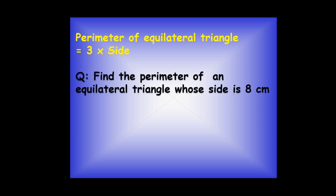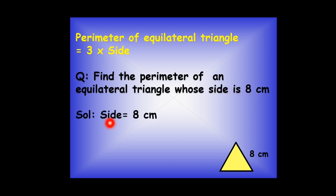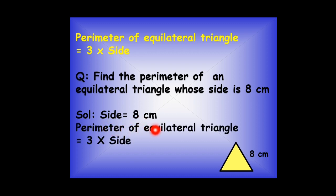Now let's find the perimeter of an equilateral triangle whose side is 8 centimeters. First we note that the side is 8 cm. The formula for the perimeter of an equilateral triangle is 3 multiplied by the side. Putting in the value: 3 times 8 equals 24 centimeters. So the perimeter of this equilateral triangle is 24 centimeters.